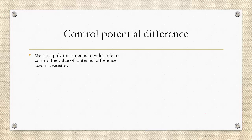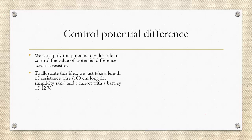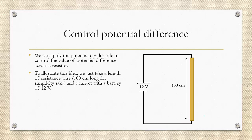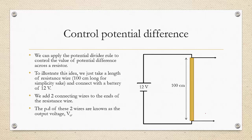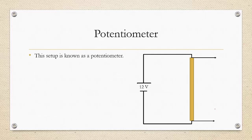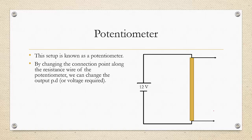To control the potential difference, we apply the potential divider rule. To illustrate this, we take a length of resistance wire — 100 centimeters long for simplicity — and connect it to a 12-volt battery. We add two connecting wires to the ends of the resistance wire, and the potential difference between these two wires is known as the output voltage. This setup is known as a potentiometer.